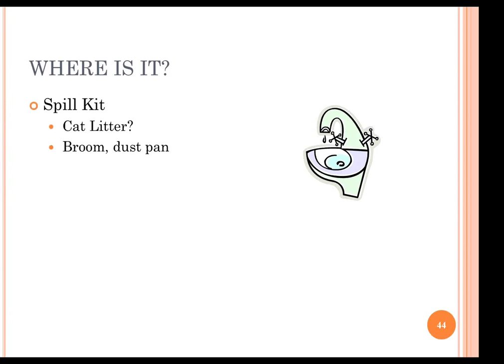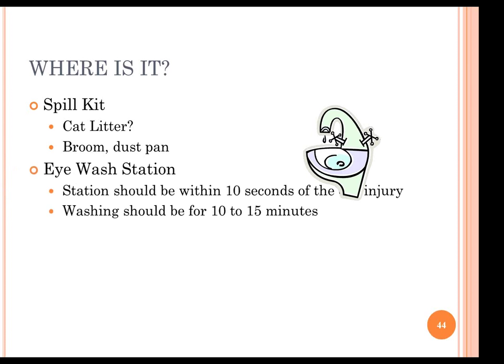Where is your spill kit? There should be supplies close by because you may not always be able to call housekeeping. There should be cat litter, a broom and dustpan for small cleanups — if it's a large job, housekeeping should be called. There should also be a designated eyewash station where you can rinse out eyes if there is a splash of bleach, paint, or any similar substance.